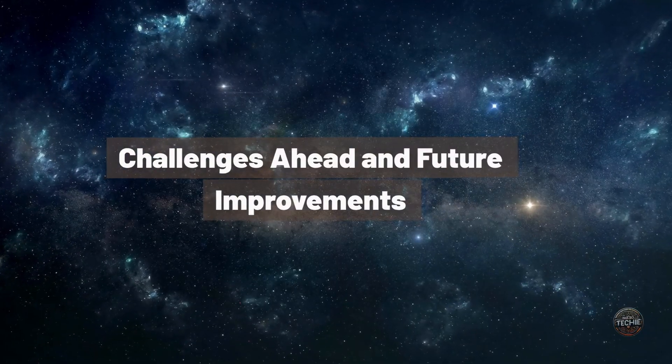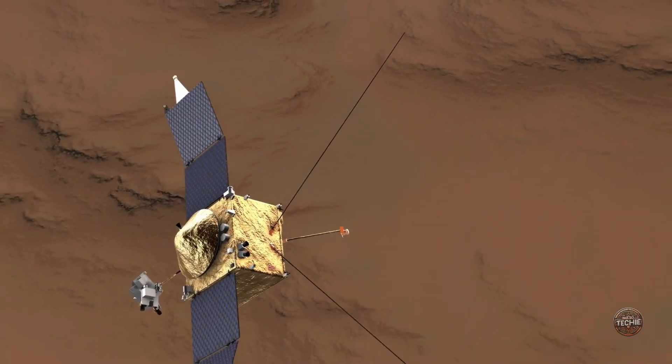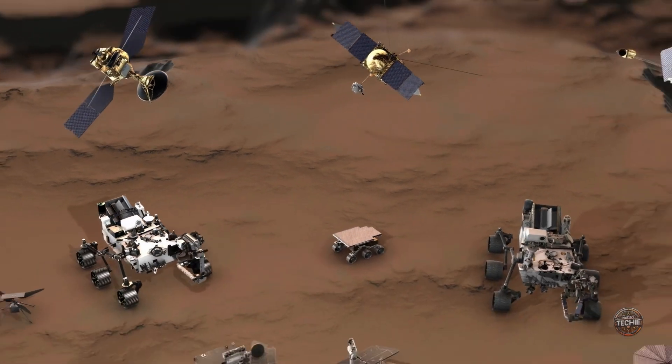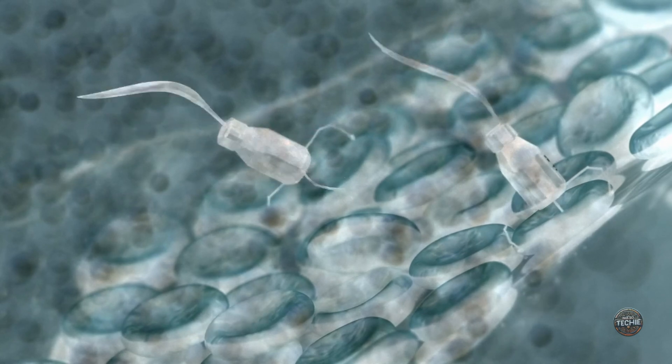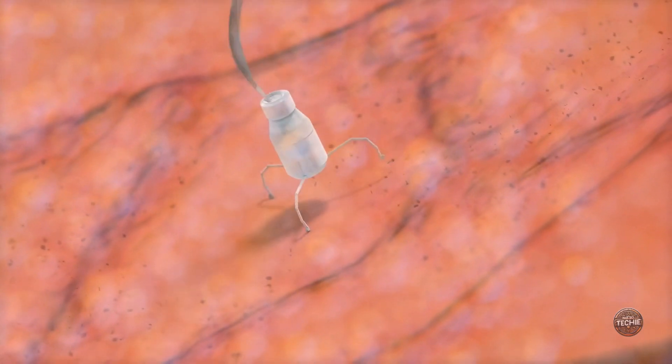Challenges ahead and future improvements. This breakthrough is just the beginning. The researchers at MIT are working to increase the battery's voltage and explore more biocompatible materials. They aim to design robots that perform complex tasks autonomously, like delivering medicine or repairing tissues, without any human intervention.